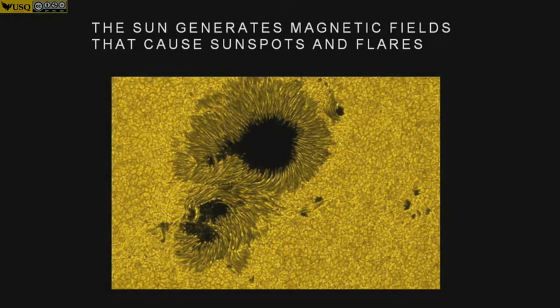We can ask ourselves what causes all the solar activity, particularly sunspots, and the answer is simple. The Sun produces a magnetic field. Inside the Sun the motion of electrical charges produces magnetism, and the magnetic fields generated inside the Sun emerge at the surface and do many things to the solar atmosphere.